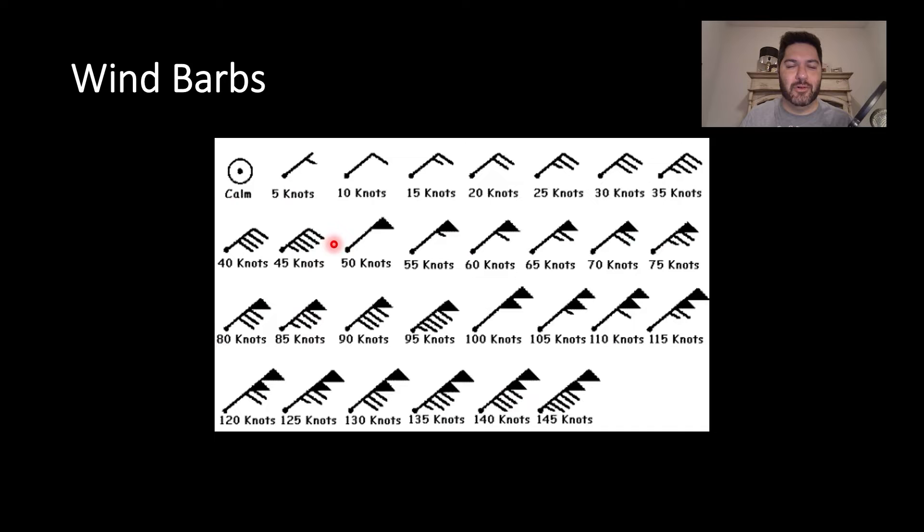The barbs equal 10 knots or half a barb equals five knots and the flags equal 50. And by the way, these winds above, say, 100 knots, you typically don't see those very often, except at the highest levels of the troposphere, which is where all of our weather happens, by the way.